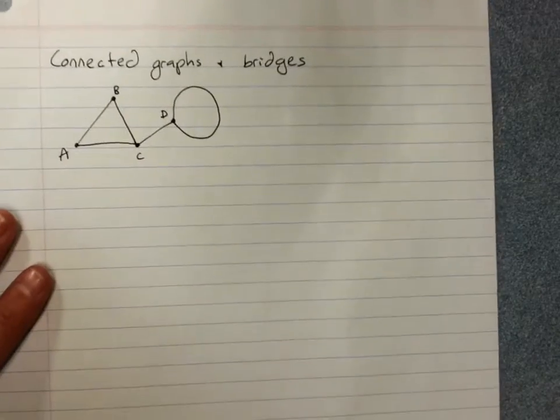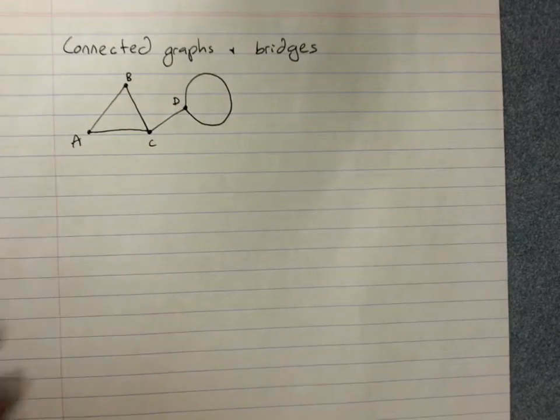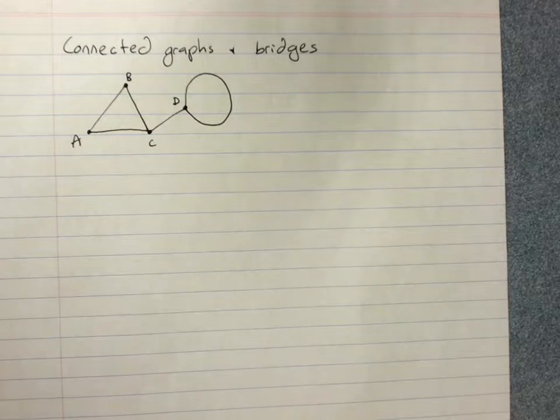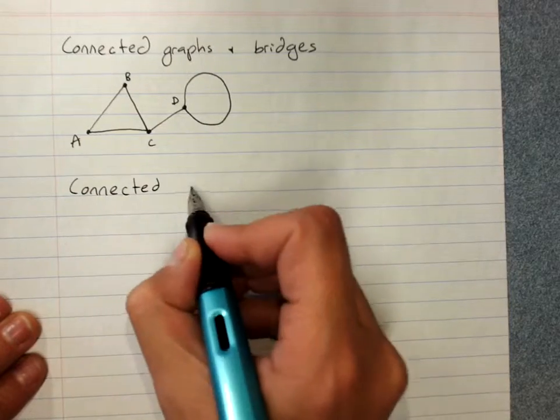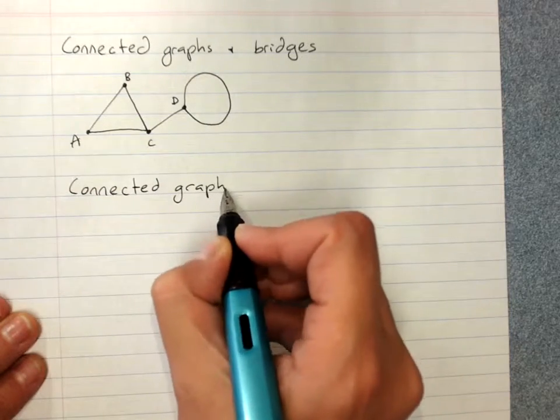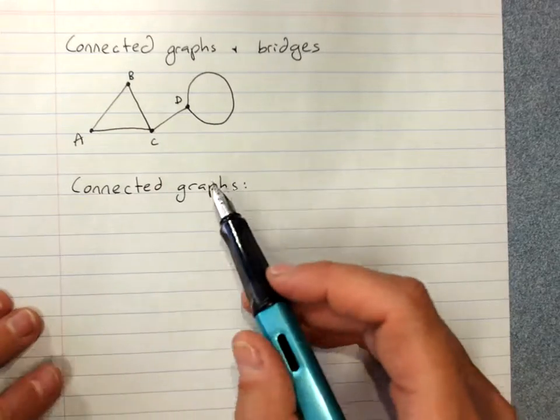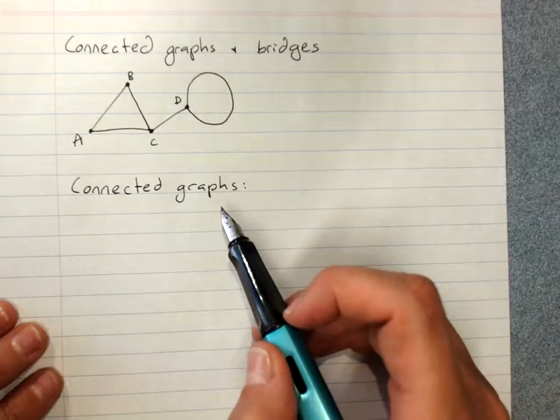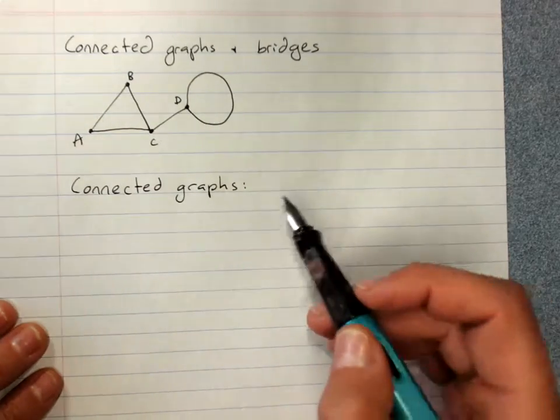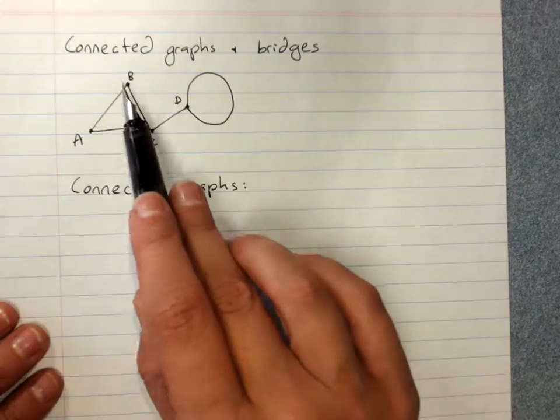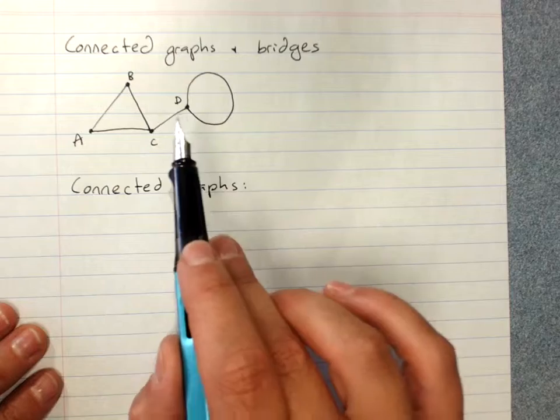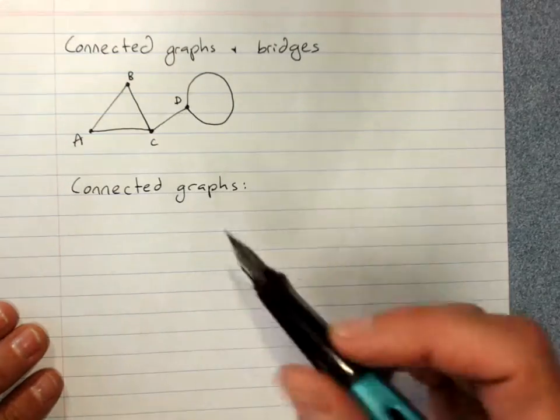Now we also have to look at the concept of connected graphs and bridges. Connected graphs, let's just write a definition. In a connected graph, every vertex is connected to every other vertex, either directly or indirectly. But you could get from any one vertex to any other vertex.